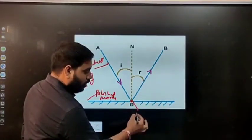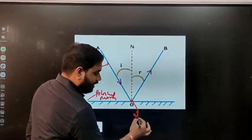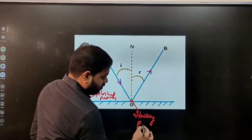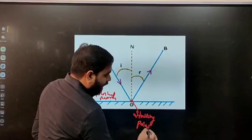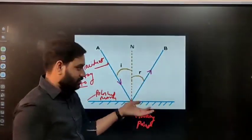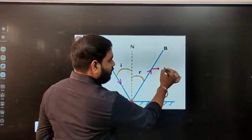It is striking from O striking point. After striking it is reflecting in that particular direction, so this ray is called reflected ray.